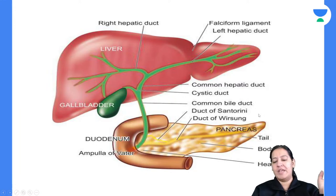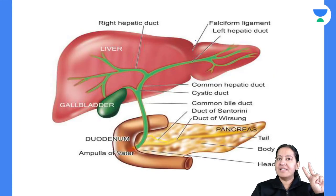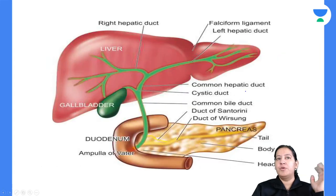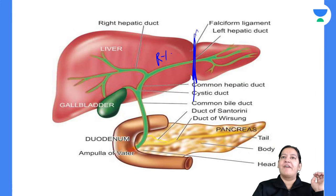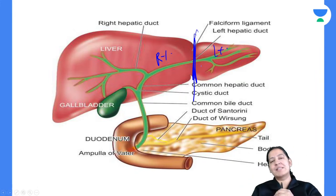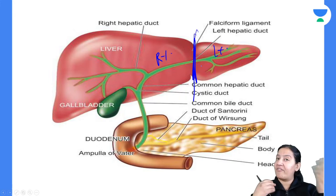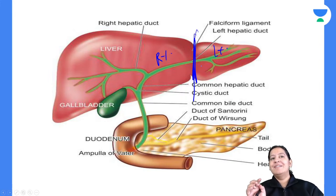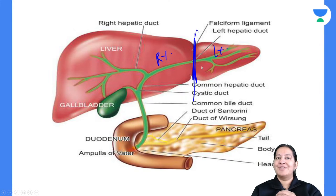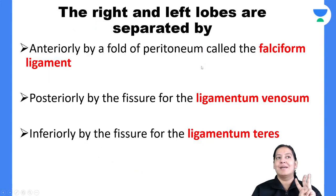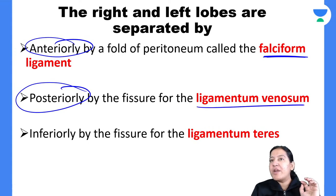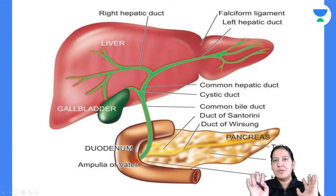The liver is the largest organ in the human body. It has two lobes: the right lobe and the left lobe. The right lobe is six times larger than the left lobe. Now, the ligament separating them has three answers depending on position. Anteriorly they are separated by the falciform ligament, posteriorly by the ligamentum venosum, and inferiorly by the ligamentum teres.